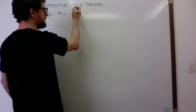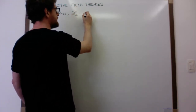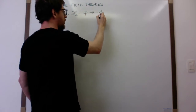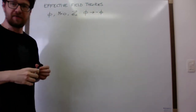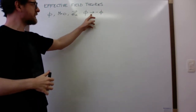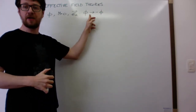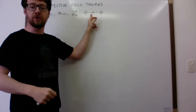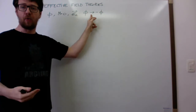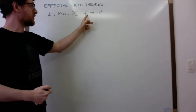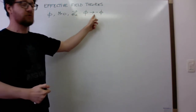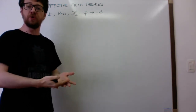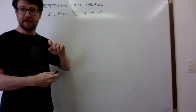I want to understand what are the possible terms I can write when I impose a global Z2 symmetry. The symmetry is there just to simplify the kind of terms we can write in our Lagrangian — there is no deeper meaning behind it. The Z2 symmetry is defined by phi going to minus phi. This immediately kills all terms involving odd powers of phi, because, for instance, phi cubed goes to minus phi cubed and wouldn't be invariant.